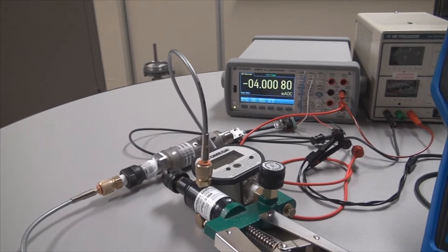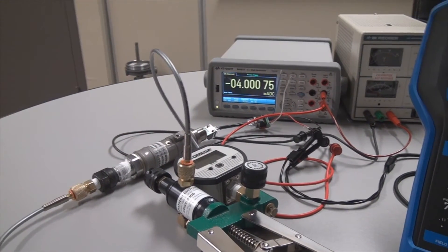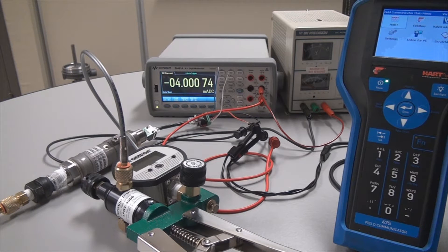So our setup here, we have the 815 PT hooked up to a hand pump pressure source. That's being powered by a 24 volt power supply and also connected to a multimeter. And then we also have the HART 475 field communicator hooked up as well.